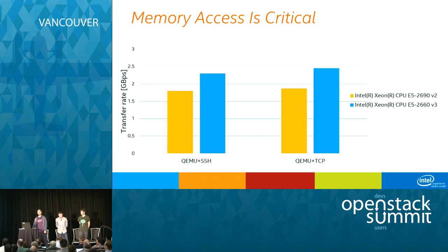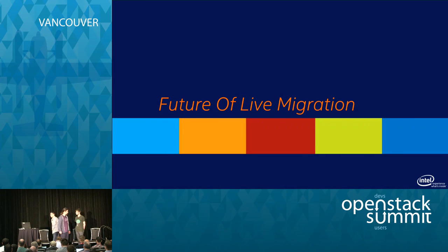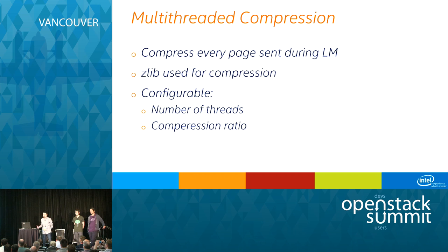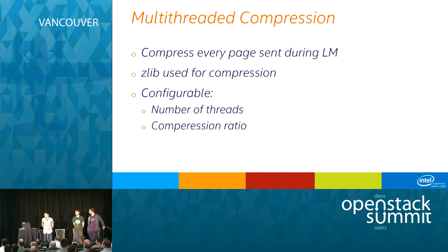Let's talk about the future of live migration. The first upcoming feature is multi-thread compression. Unlike the run-length encoding compression discussed earlier, this compresses every page sent during live migration rather than only pages that are resent. Zlib is used for compression, and the configurable parameters are number of threads and compression ratio. The goal is to reduce the amount of data transferred over the network so that live migration finishes faster and also helps mitigate the problem of never-ending live migration.